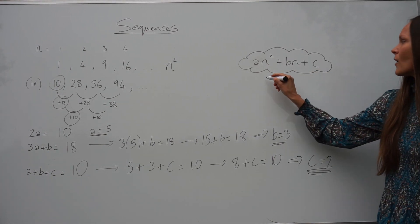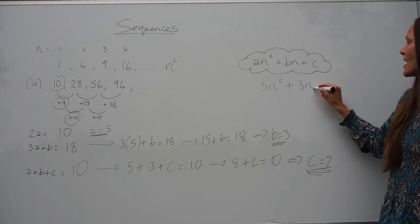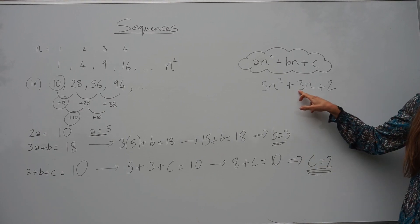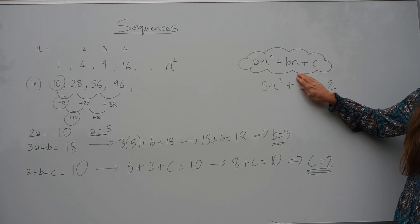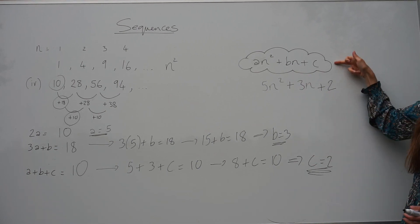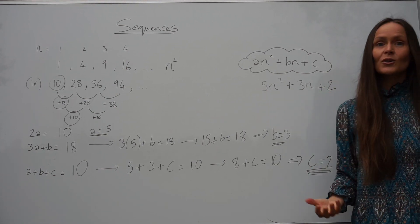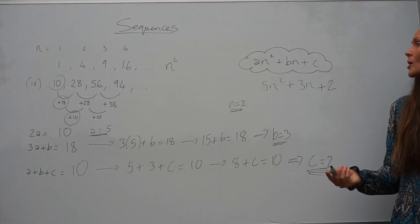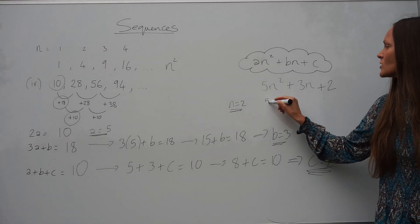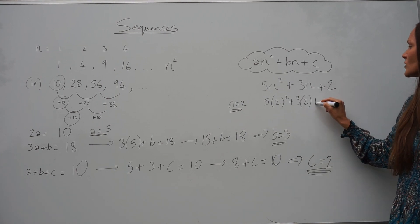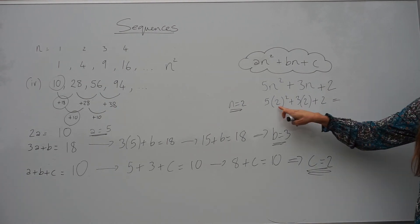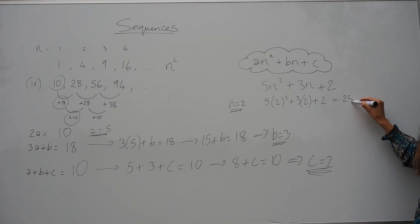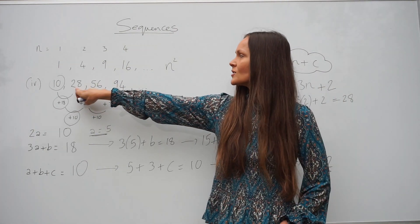Replacing a with 5, b with 3, and c with 2 gives the nth term as 5n squared plus 3n plus 2. If any value were 0, you'd leave that part out. Let's verify by checking n equals 2: 5 lots of 2 squared plus 3 lots of 2 plus 2. That's 5 times 4 plus 6 plus 2, which is 20 plus 6 plus 2, giving 28. And the second term in our sequence is indeed 28 — it works.